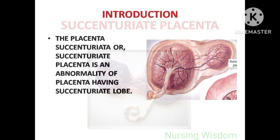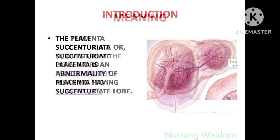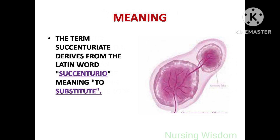The placenta succenturiata, or succenturiate placenta, is an abnormality of the placenta having a succenturiate lobe. The term succenturiate derives from the Latin word succentureo, meaning to substitute.